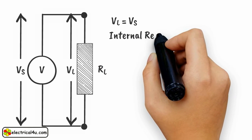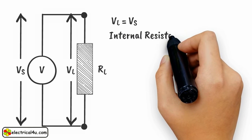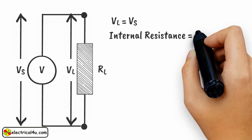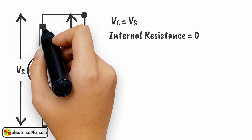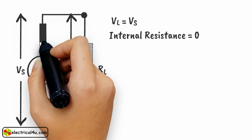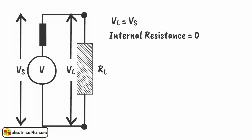The internal resistance of the source is therefore zero. In a practical voltage source, there will be a drop in voltage available across the load due to voltage drop in the resistance of the source itself, when a load is connected, as shown here.